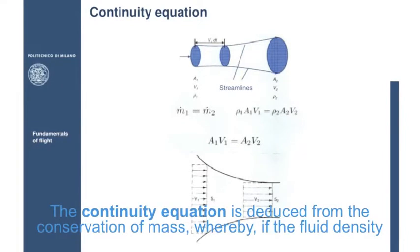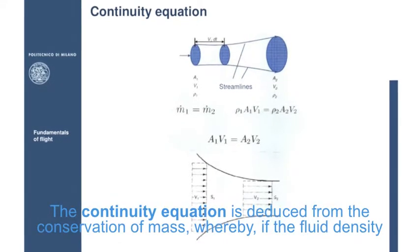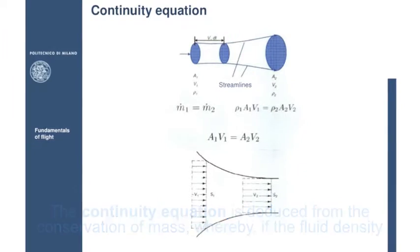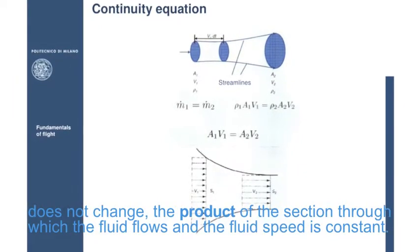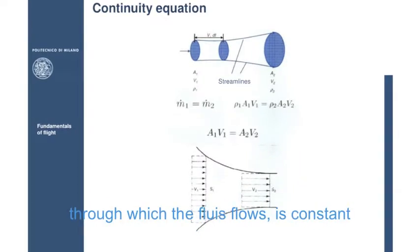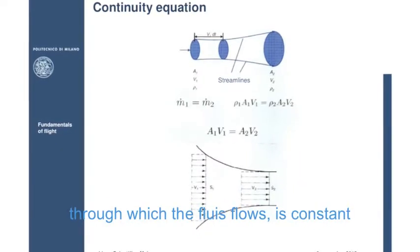The continuity equation is deduced from the conservation of mass, whereby, if the fluid's density does not change, the product between the fluid's speed and the section through which the fluid flows is constant.